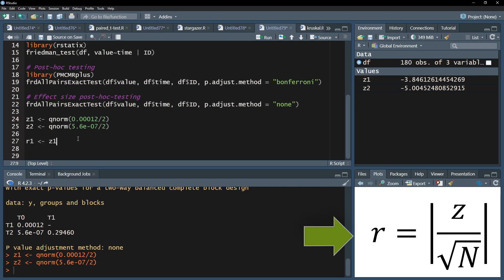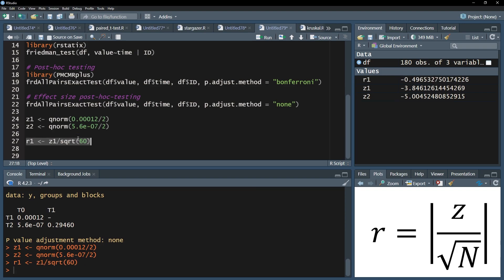I can now use the formula for the effect size r. The recently calculated standardized test statistic z will be divided by the square root of the number of paired observations. Effect sizes will ignore the minus sign, therefore only positive values are used and reported.